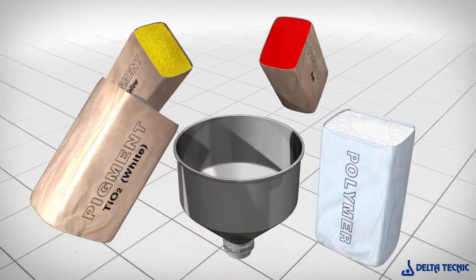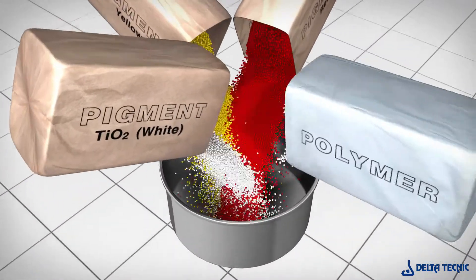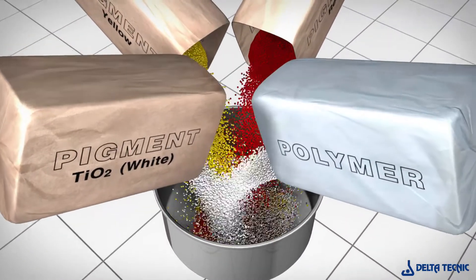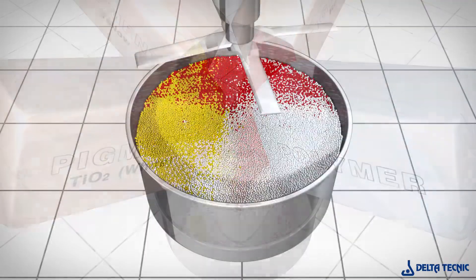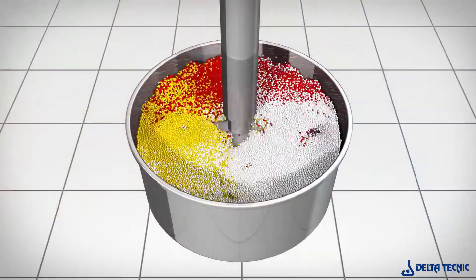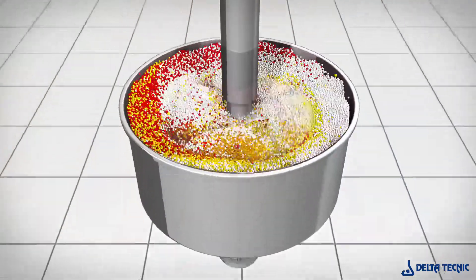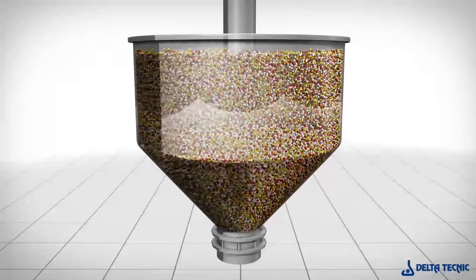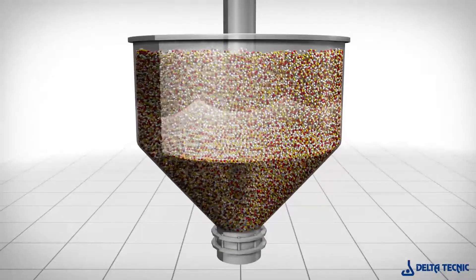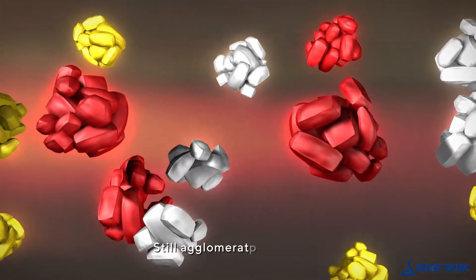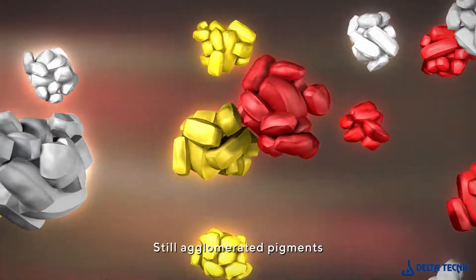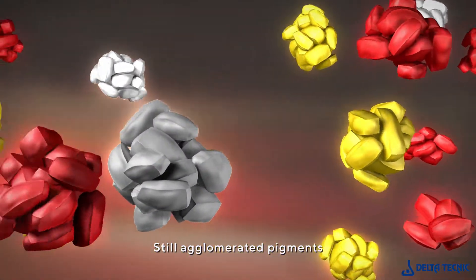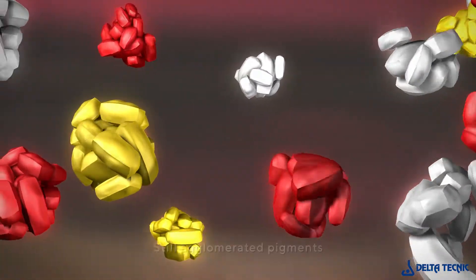In the initial phase of producing a master batch, the necessary pigments and additives are placed in a mixer. During this mixing time, the agglomerates in the pigments begin to break down slightly due to the mechanical friction between the molecules of the various additives included. This is the so-called pre-dispersion phase.